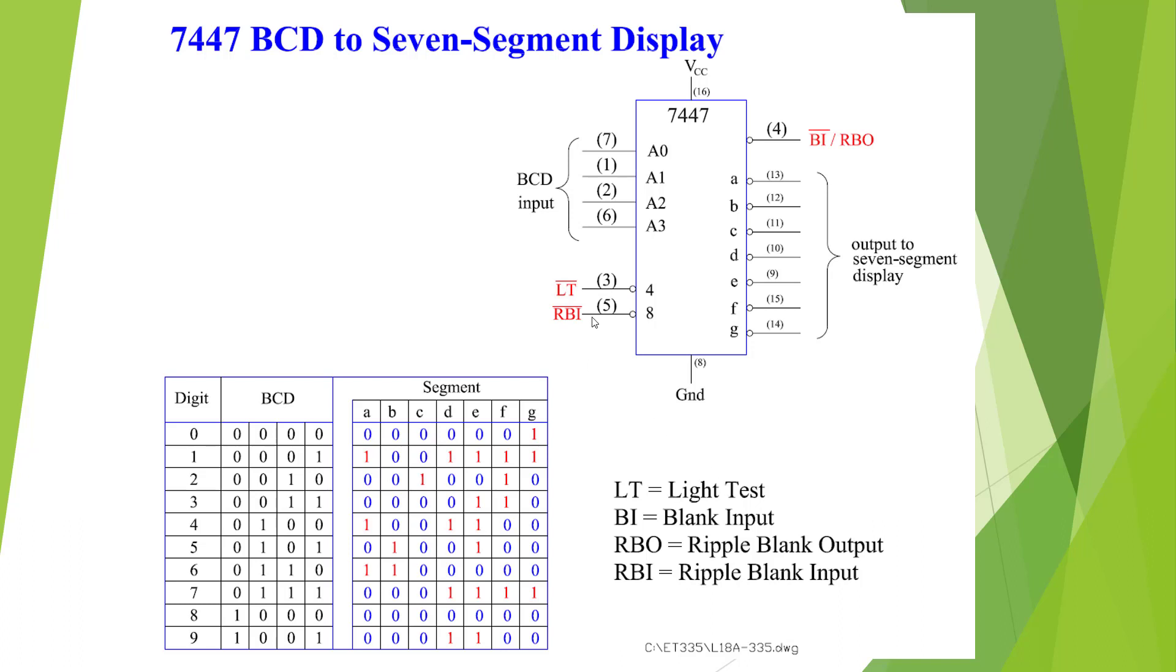Then we have RBI. If this one pulls low, this is a ripple blanking input, which means if we display a 0, or if we get a 0 code come in, it will not display the 0. It's for blanking out 0s on display so we don't want the 0 to show. When this guy is low and we get a 0, we're going to get an RBO out, which we're going to feed to the next device.